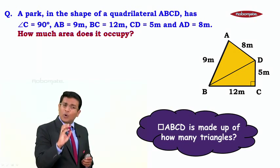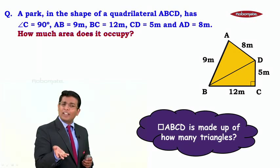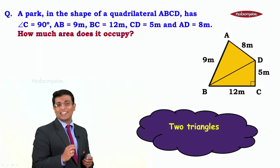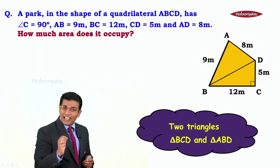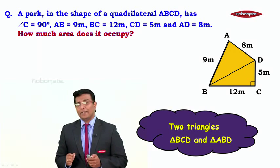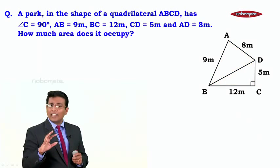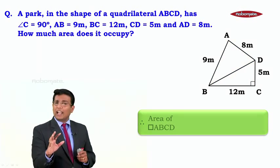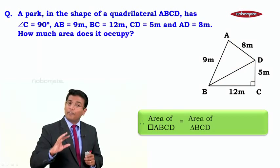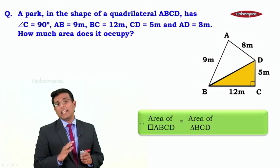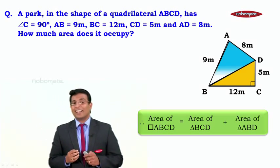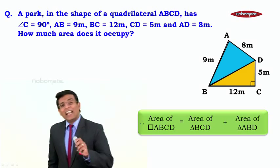If you look here, this quadrilateral ABCD is made up of how many triangles? Yes, it is made up of two triangles. Which are they? Triangle BCD and triangle ABD. That means the sum is very simple. If you want the area of this quadrilateral ABCD, we can say that it is nothing but area of triangle BCD plus area of triangle ABD.